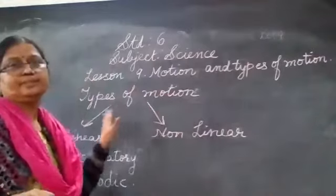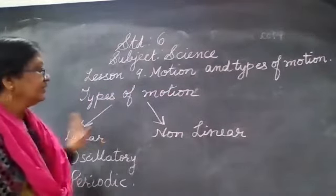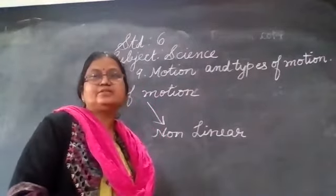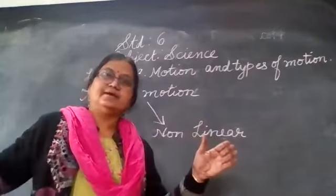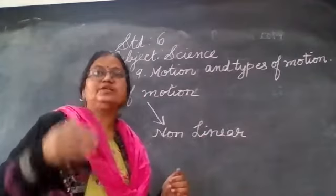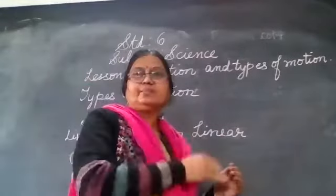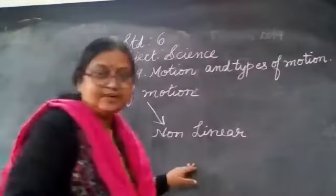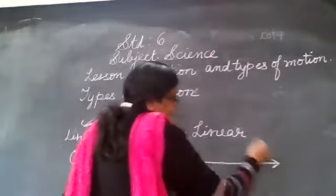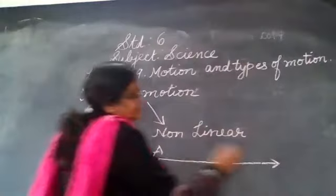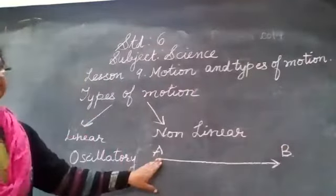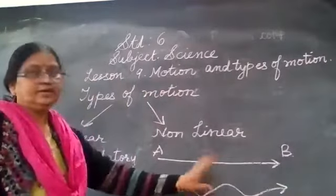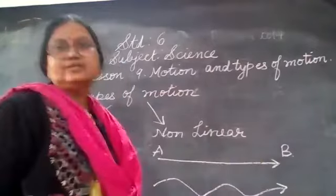There are many types of motion and these are divided into two: linear and non-linear type of motion. Linear motion means something which is moving in one straight line. Suppose you are watching a moving train — it is a better example. A moving train when it moves from one station to another station, it will go only in one straight line. That displacement is only in one line, and that is known as linear motion.